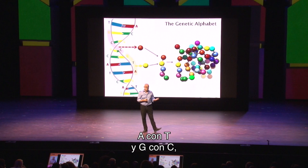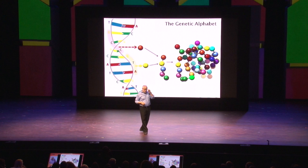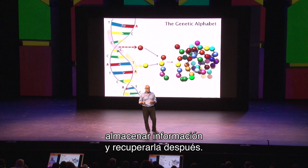The formation of those base pairs — A pairing with T and G pairing with C — is what allows DNA to do that, and that's why it's stable. It's also what allows DNA to store information and for that information to be retrieved.